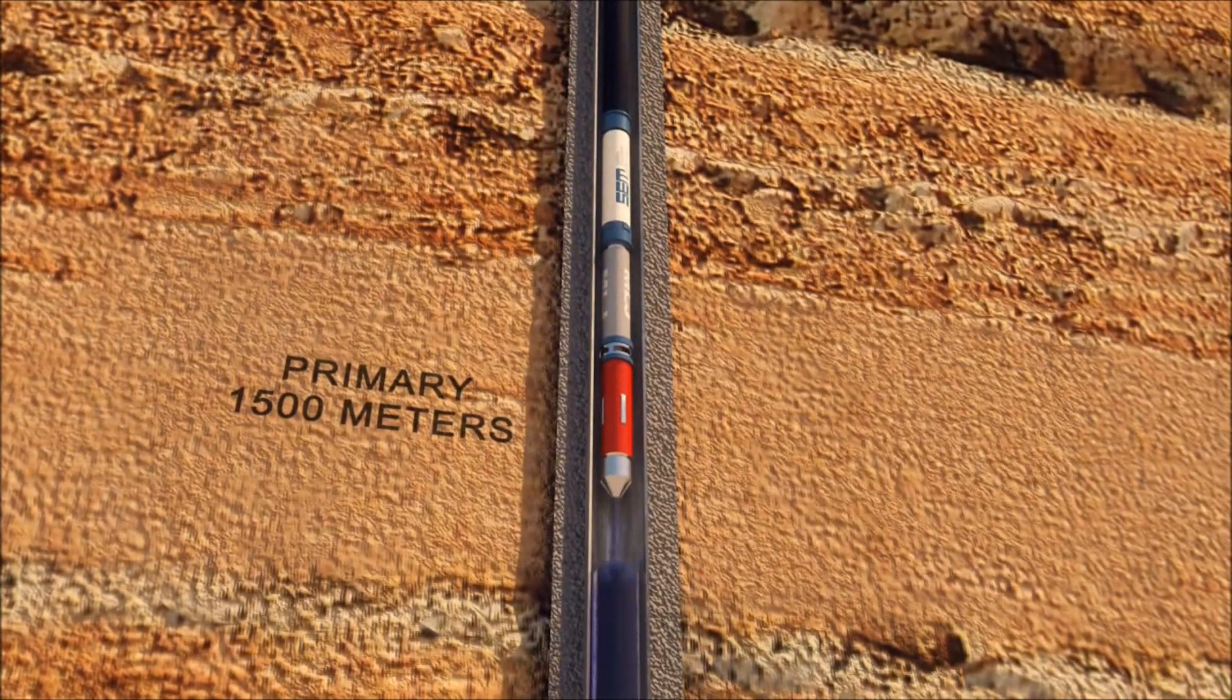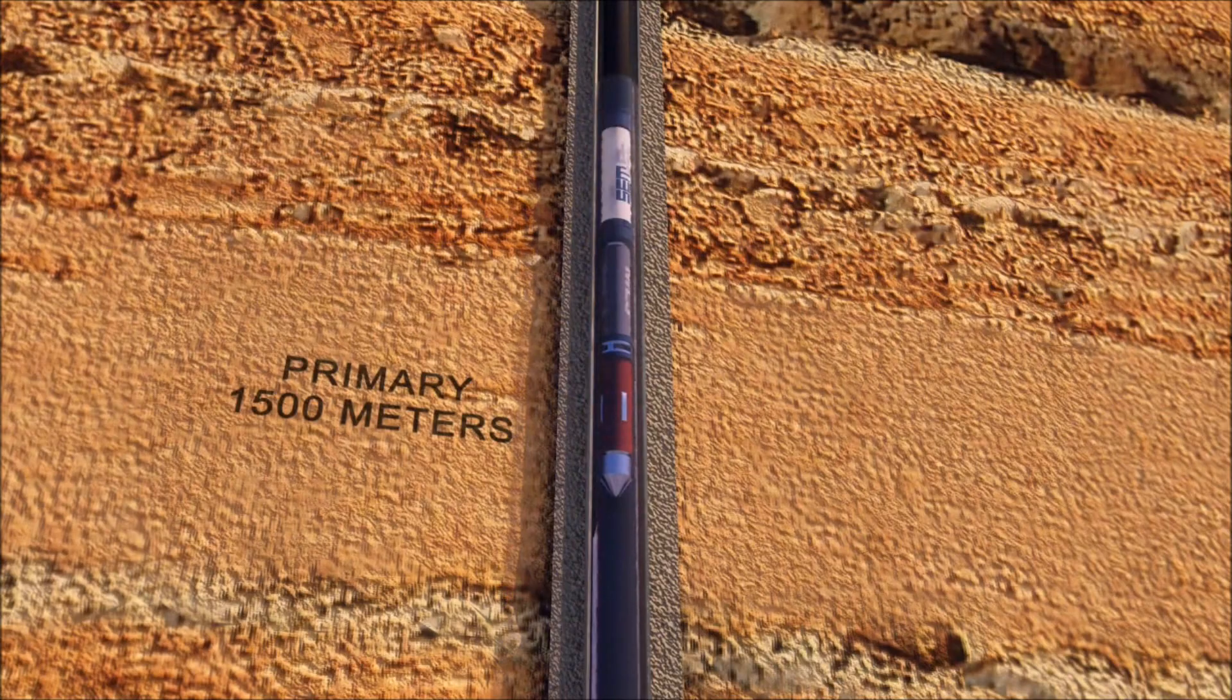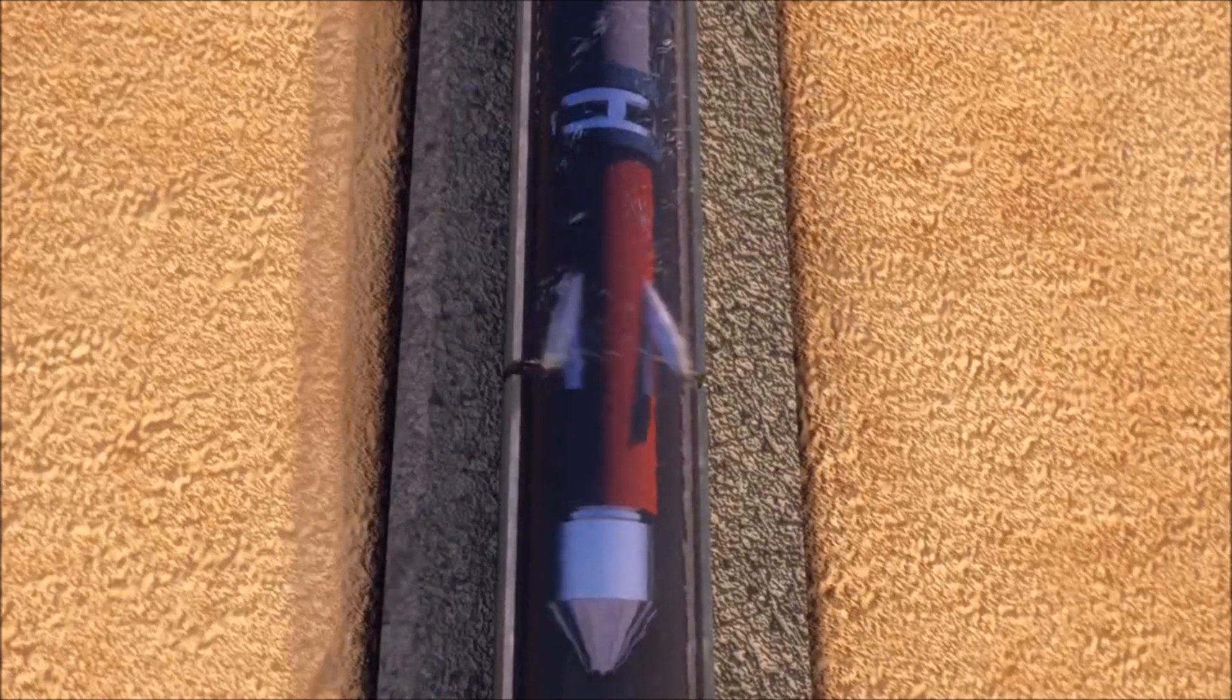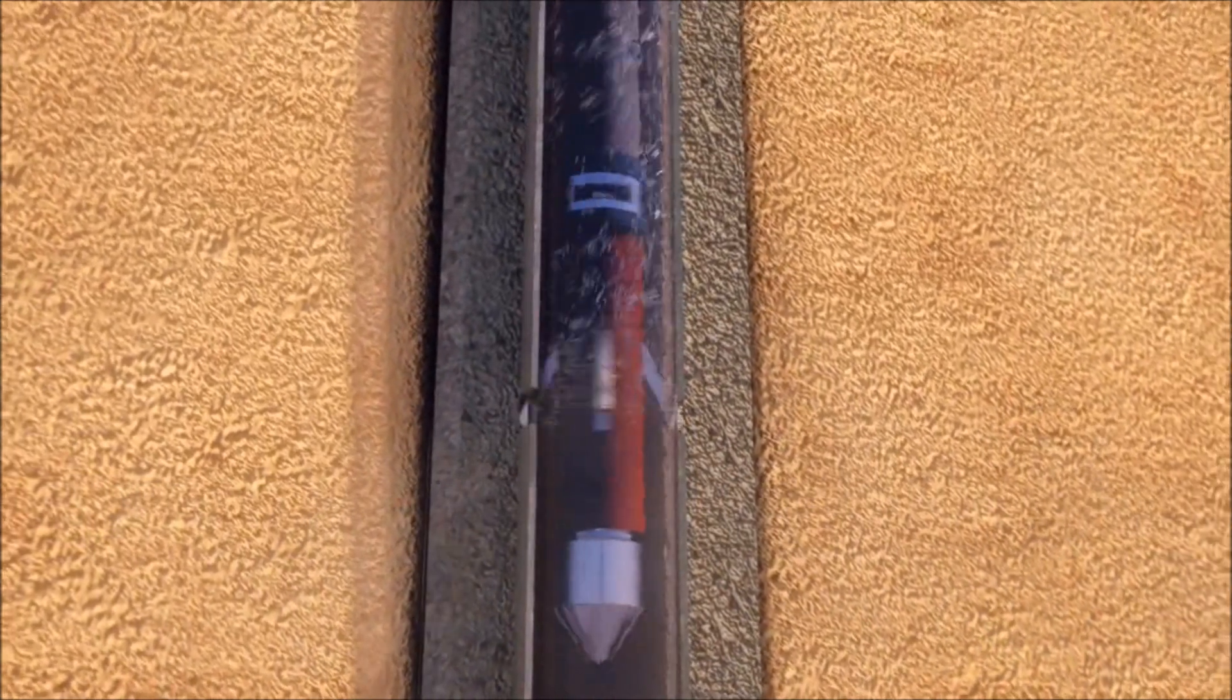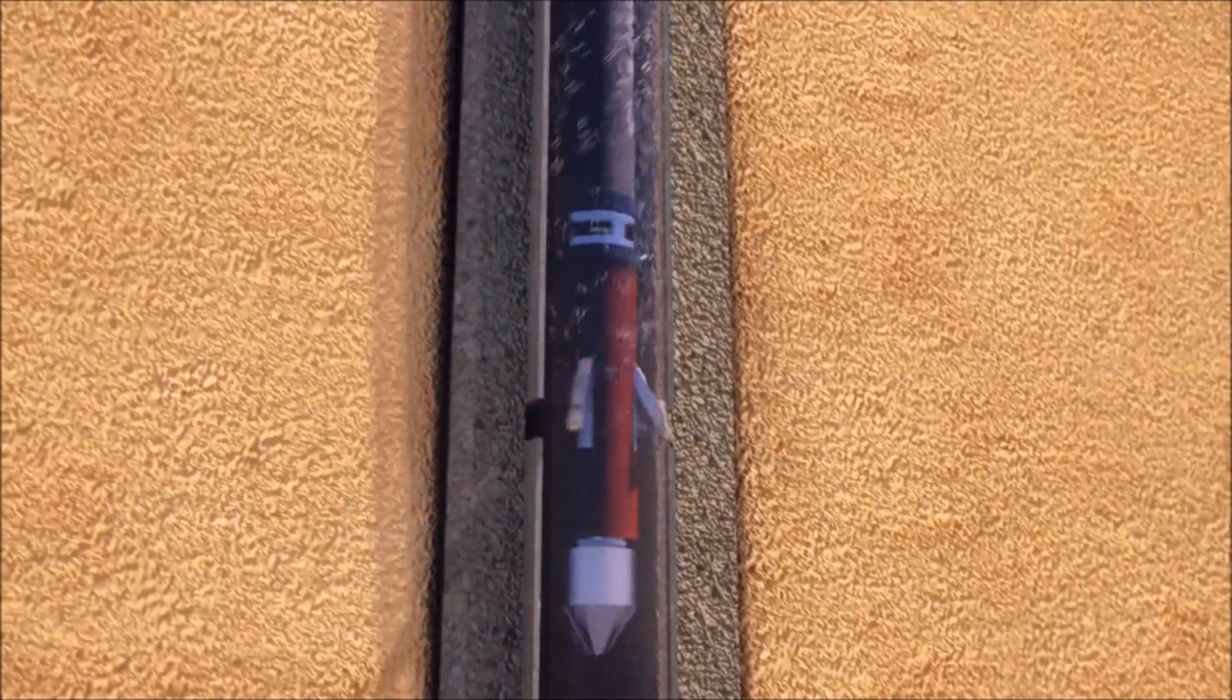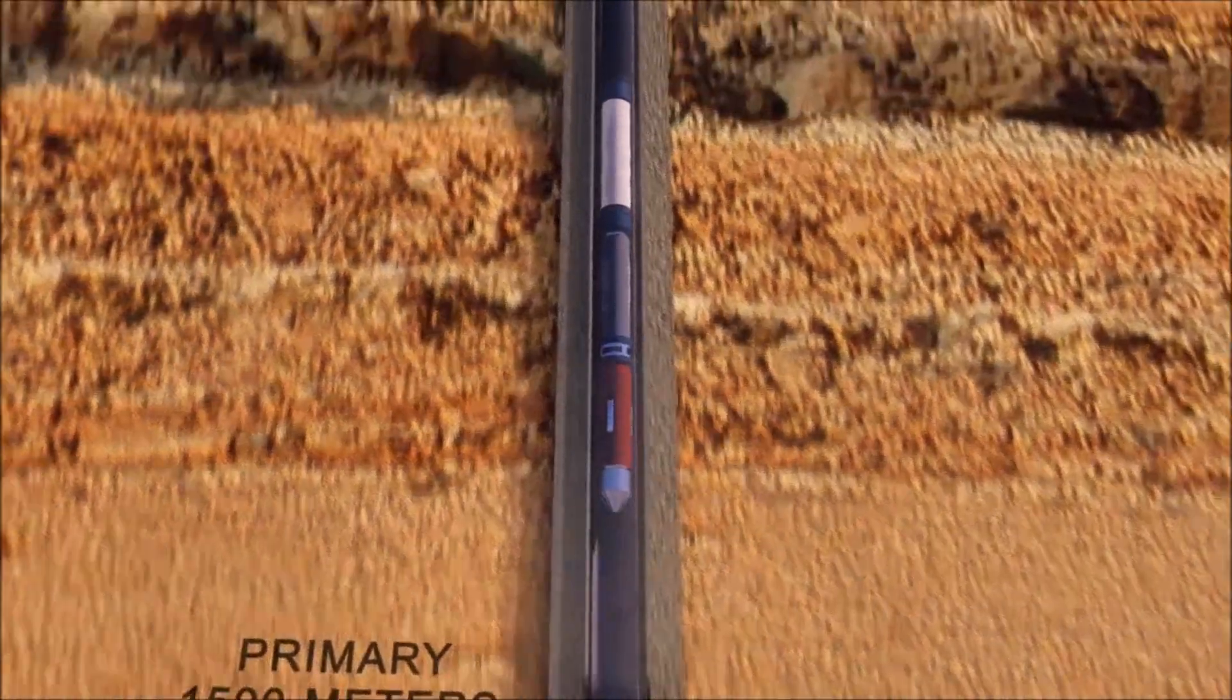Fluids are circulated through the Simjet tool string, which activates the custom milling tool. A window is milled in the casing at each target zone to create open access to the formation.